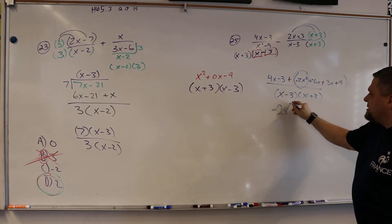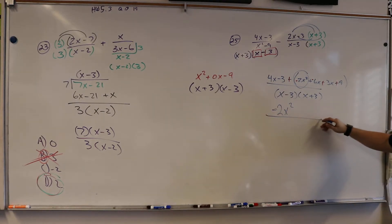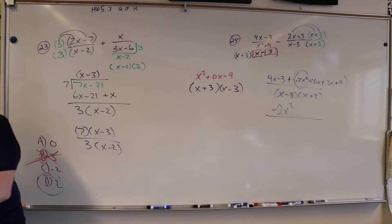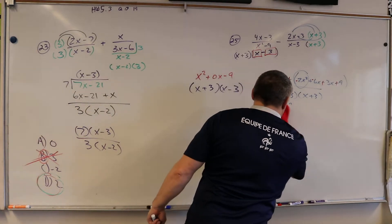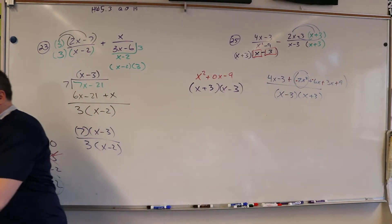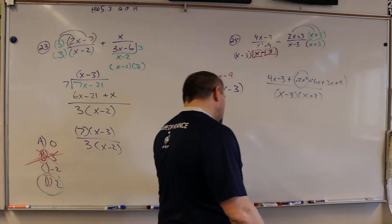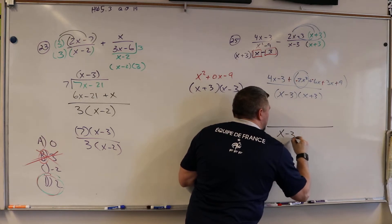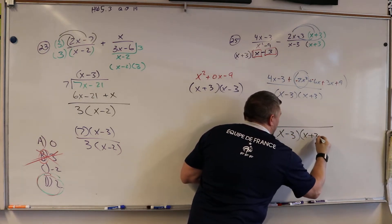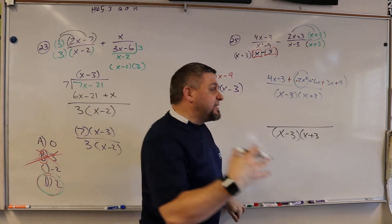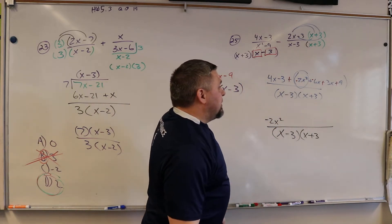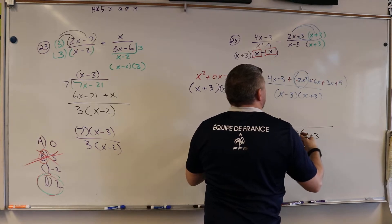Negative 2x squared, right? Oh, that's the same color. You're not going to like this. All right, here we go. So on the bottom, we still have x minus 3 times x plus 3, right? And on the top, we have negative 2x squared.